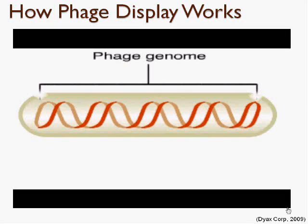The phage display method is a technique that can be used to find zinc finger proteins that will bind to a specific targeted DNA sequence. Phages are viruses that are able to infect bacteria such as E. coli and integrate their own genetic material with that of the bacteria.